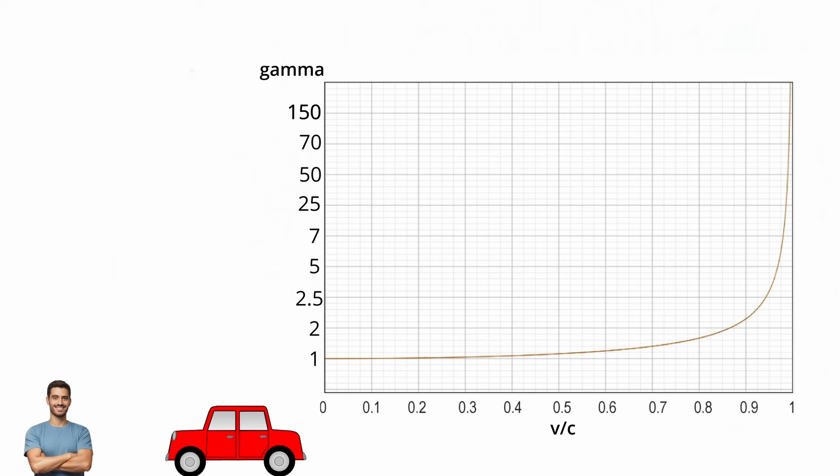Now, when the car is traveling at 99% the speed of light, the gamma value would be 7. This means that it'll take 7 whole seconds for the man watching, before 1 second actually passes for the man inside the car.